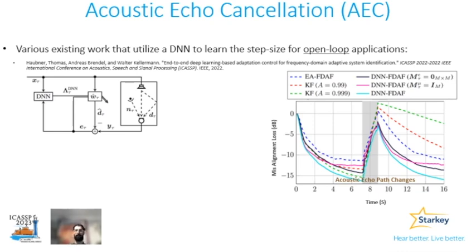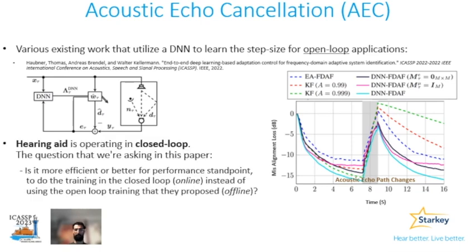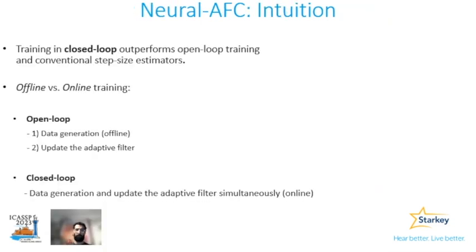However, the hearing aid is working within the closed loop. So the question we are trying to answer here is: is it more beneficial to train the model in the closed loop — meaning, is it better to consider the coupling between the input and output at the time of training, or not? It turns out that training the model within the closed loop can outperform open-loop training.